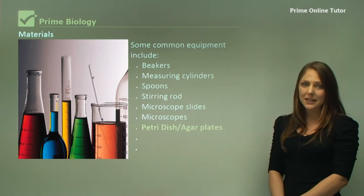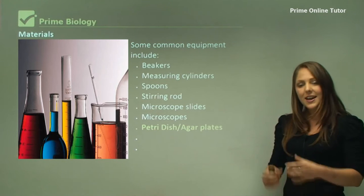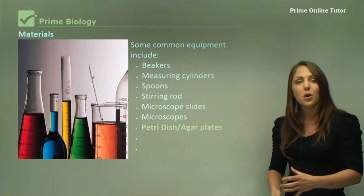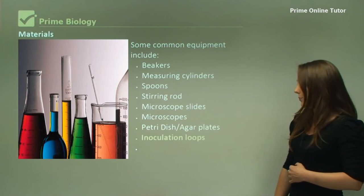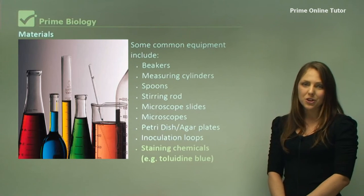Other equipment includes petri dishes or agar plates. Agar plates are actually a nutrient like a jelly that they put in the petri dish, and you can grow microbes such as bacteria on them. Also, inoculation loops and staining chemicals such as toluidine blue.